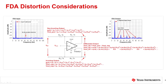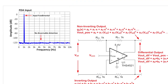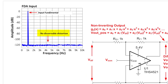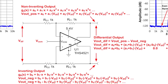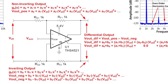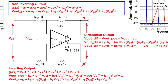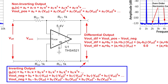This slide gives some insight into the impact that using an FDA device has on distortion. Assume for a moment that the input signal has no or a minimal amount of distortion components. Any distortion introduced by the FDA is due to non-linearity in its transfer function. It's important to understand that these non-linearities are generally very small and for many applications may be negligible. Nevertheless, these non-linearities do exist and can be modeled as a polynomial. At the top of the slide we show the output function as a polynomial for the non-inverting output, and at the bottom of the slide we show it for the inverting output.